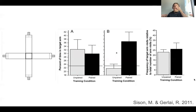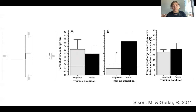I found this researcher up in Canada — his name is Richard Gerlei — and his group, back in 2011, looked at a spatial learning task. I really like Dr. Gerlei. He is a behavioral neuroscientist who is looking at genetic phenotypes for different anxiety behaviors.